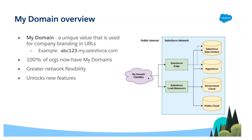We are going to talk about enhanced domains. First we have to talk about My Domain. My Domain is a unique value used for company branding in URLs — for example, abcd123.my.salesforce.com or your company name like myforce.com. Hundreds of orgs now have My Domains — in fact, one hundred percent of orgs now have My Domains.